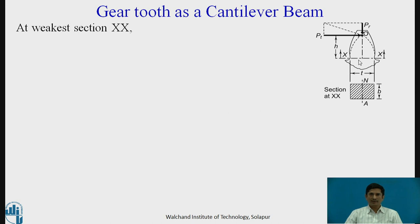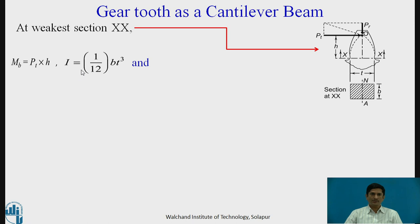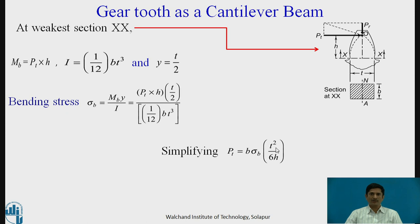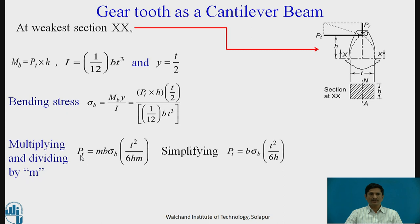At the weakest section (section XX) in the gear tooth, the bending moment equals Pt times H. The section modulus is (1/12)Bt³ and y equals T/2. With these values, bending stress sigma B equals MB times y divided by I. Substituting and simplifying, we get Pt equals B sigma B T² upon 6H. Multiplying and dividing by M (the module), we get Pt equals M B sigma B times (T² upon 6HM), where T² upon 6HM is called Levy's form factor.